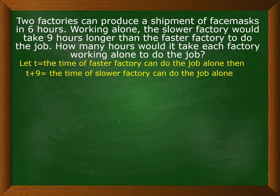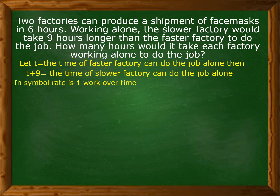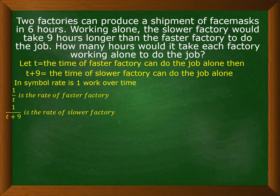We need to let the following: Let T be the time the faster factory can do the job alone. Then T plus nine is the time the slower factory can do the job alone. The higher the time, the slower the factory. In symbol, rate is one work over time. So the rate of the faster factory is one over T, and for the slower factory, you have one over T plus nine. According to the problem, they will work together, meaning you will add the two rates.